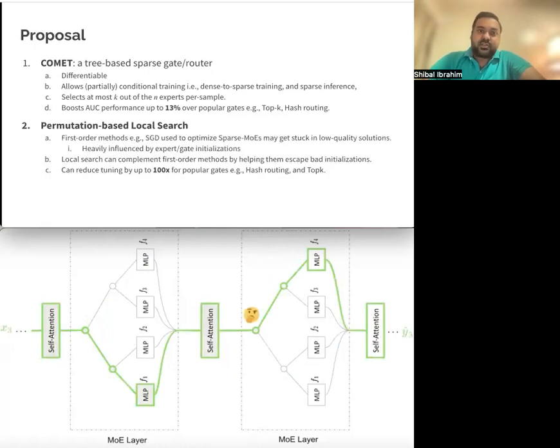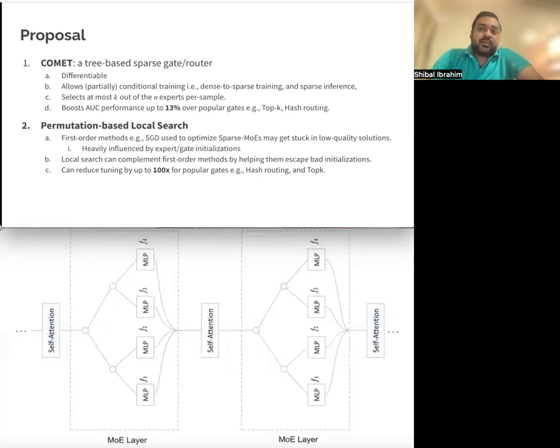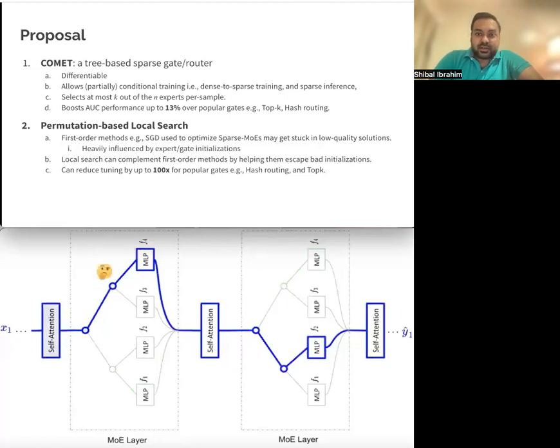The second contribution is a permutation-based local search. Optimization methods primarily used to optimize sparse mixture of experts are first-order methods like SGD, and they can get stuck in low-quality solutions. We show that local search can complement these first-order methods to help them escape bad initializations, and this can reduce tuning by up to a factor of 100 for popular gates like top-k and hash routing.